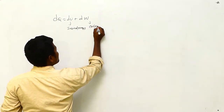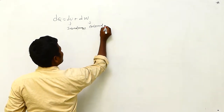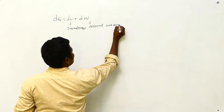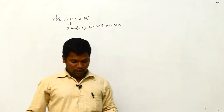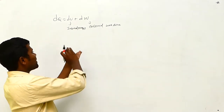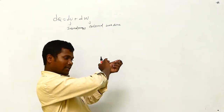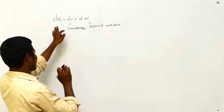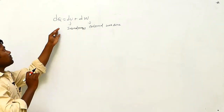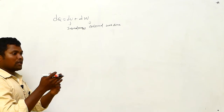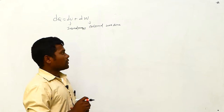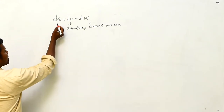Some energy becomes external work done on the system. The sum of the internal energy and external work done equals the amount of heat supplied to the system. This is the first law of thermodynamics.